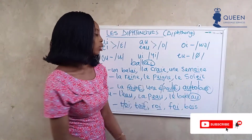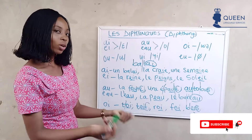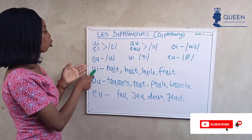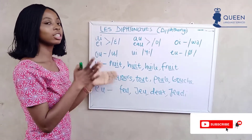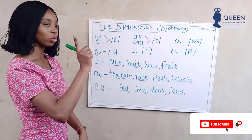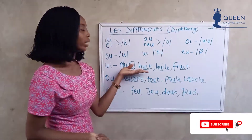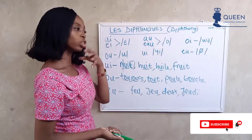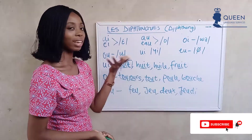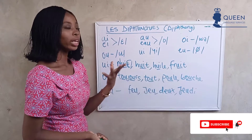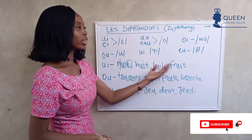Next, when we see 'ui' in French, it is pronounced 'wi'. We have it in words like 'huit' — note the 'h' is silent in French, so we just say 'huit'. We also have 'huile', where the 'h' is silent, giving us the 'ui' and 'l' sounds. And 'fruit' — 'fr' plus 'uit' — gives us 'fruit'.